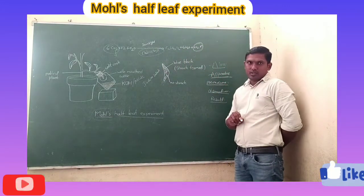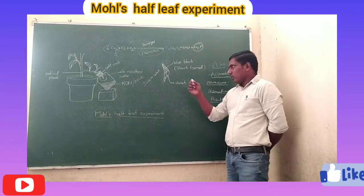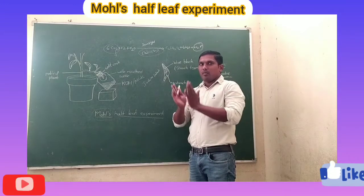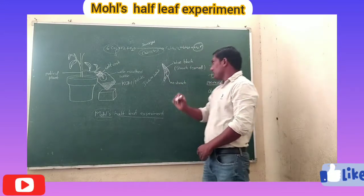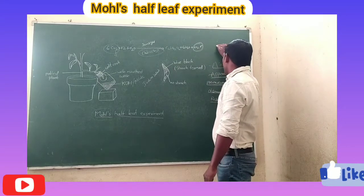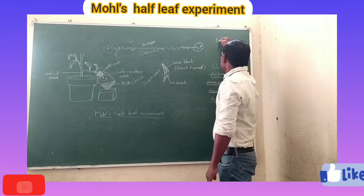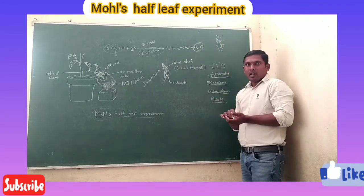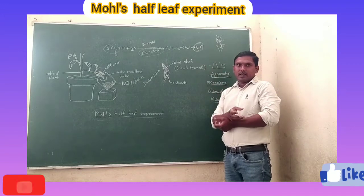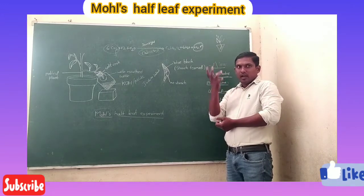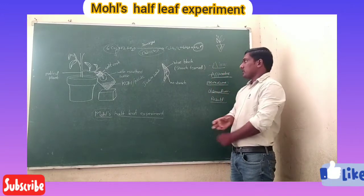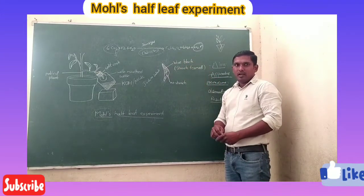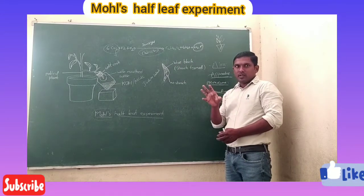For the procedure, before doing this activity we select one potted plant and keep it in a dark room. We need to destarch the plant. When we keep it in the dark room, they don't have sunlight, so the plant cannot carry out the photosynthesis process. We take the destarded plant — the one which we have kept in the dark room — and then select the leaves.